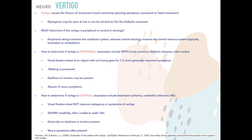BPPV — benign paroxysmal positional vertigo — is the most common type of peripheral vertigo. Other examples include Meniere's disease and otitis media. To determine if vertigo is peripheral, use visual fixation: have the patient stare at an object for one to two minutes. This should improve nystagmus. With peripheral vertigo, walking is preserved — they may feel off balance but can still walk — and deafness or tinnitus may be present, with no neurological deficits.